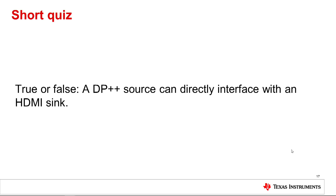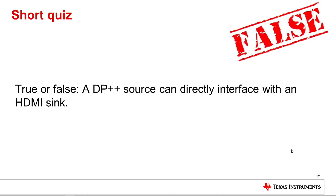Number 2: True or false — a DP++ source can directly interface with an HDMI sync. The answer is false. Although DP++ and HDMI are functionally equivalent, DP++ is a DC coupled interface and has different voltage levels for its AUX and HPD channels. Therefore, a cable adapter is needed to connect a DP++ source to an HDMI sync.